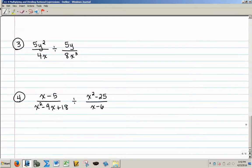Here's a couple division problems. I have 5y squared over 4x divided by 5y over 8x cubed. First step is to write the first fraction the same as it is, change my division to multiplication, and then flip my second fraction. Remember the rule is to multiply by the reciprocal of the second fraction. And this example has no addition or subtraction in it, so I can just start canceling.